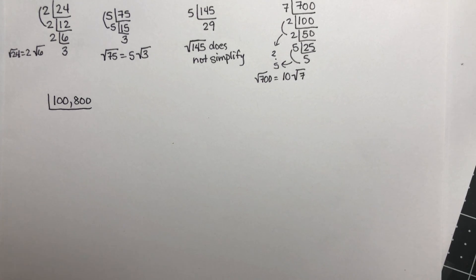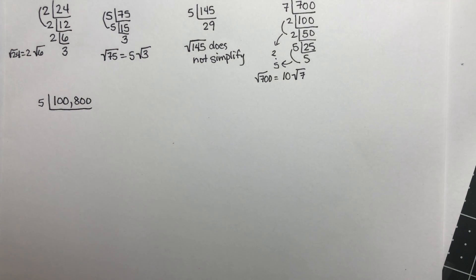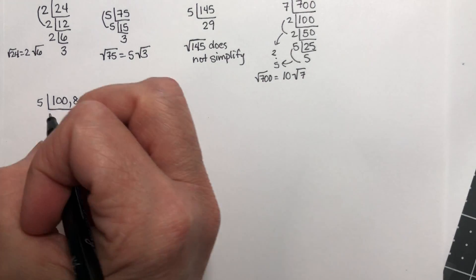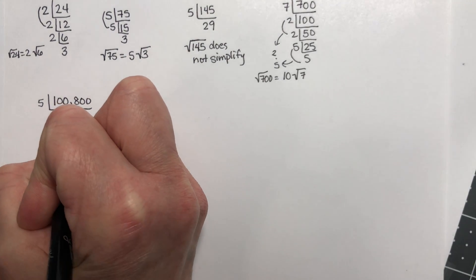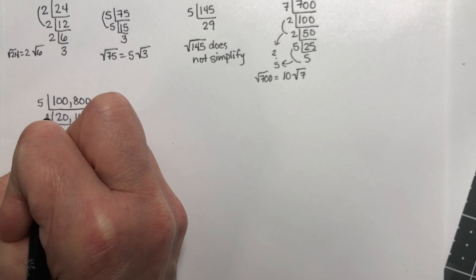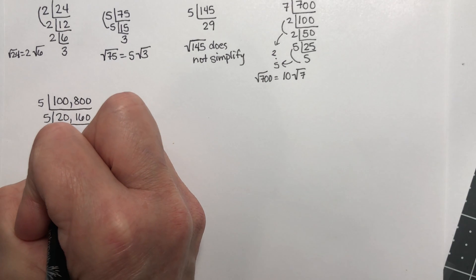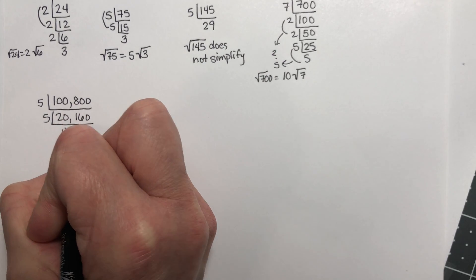It ends in zero, so let's divide it by 5. If you divide that by 5, you get 20,160. Still ends in zero, so it's still divisible by 5. So I divide it by 5 again, and I get 4,032.